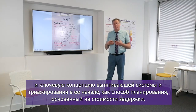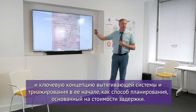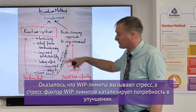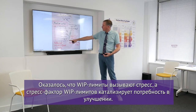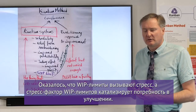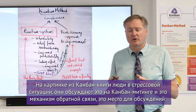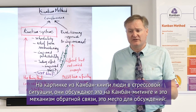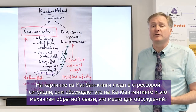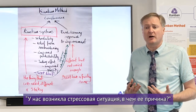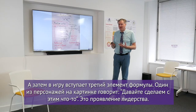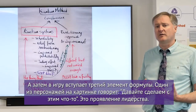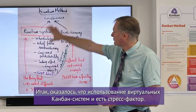The whole concept of a pull system and triage on the front end as a way of scheduling based on cost of delay. It turns out that WIP limits are stressors, and the stress of the WIP limit catalyzes the need for improvement. In the cartoon in the Kanban book, they're under some stress, they're discussing it at the Kanban meeting — that's a feedback mechanism, a forum for discussing what's causing that stress. Then a fourth character says 'let's do something about it' — an act of leadership.